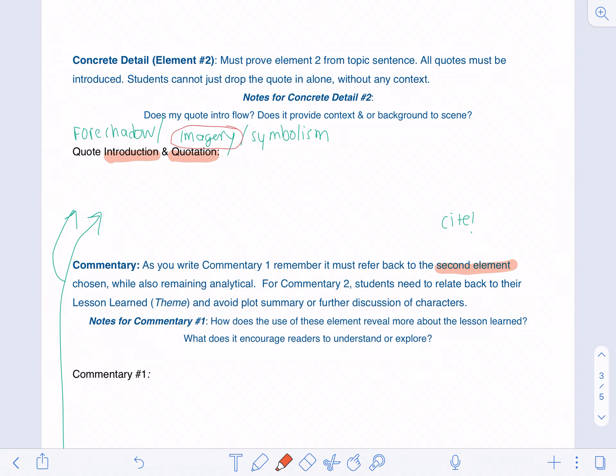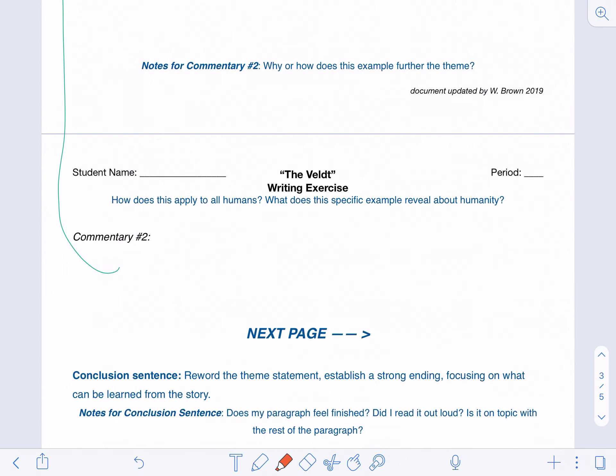As you choose, you have to double check your boxes, of course, making sure they actually prove your lesson learned. But first, in commentary one for concrete detail number two, you have to discuss the second element that was chosen and provide analysis of that actual element. What does the imagery help you imagine? What does the symbolism reveal? What does the foreshadowing allude to later in the story? And commentary number two is once again that universal aspect: What does it reveal about humanity? How does this lesson apply to all humans?